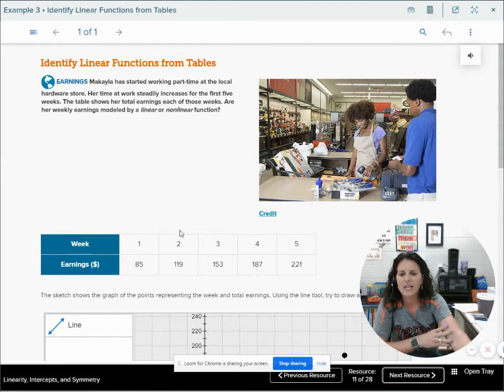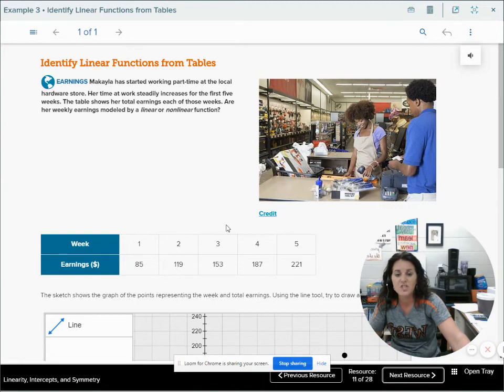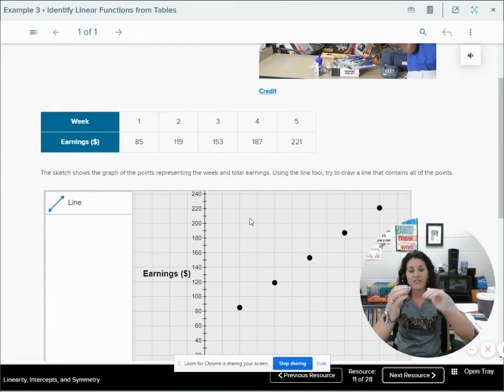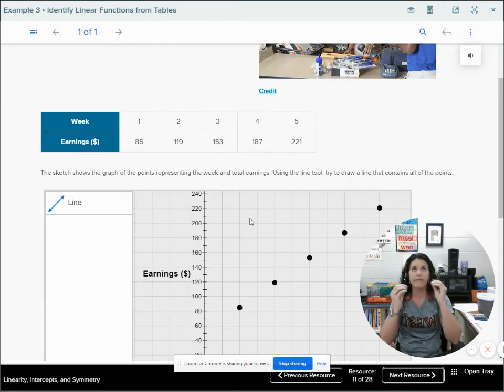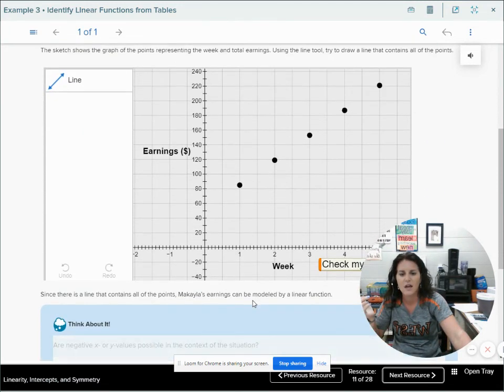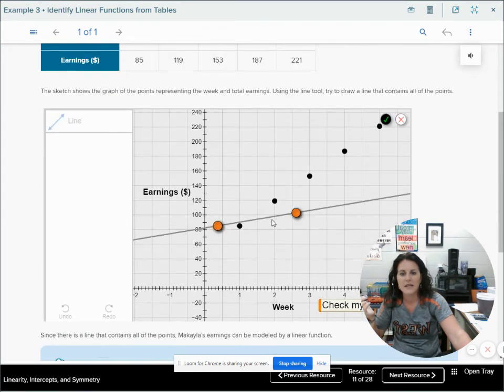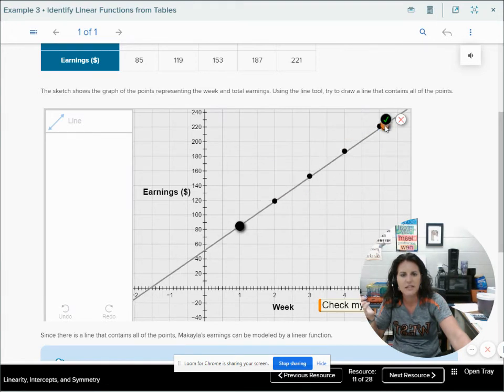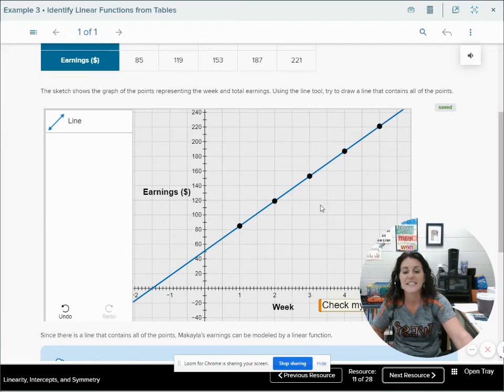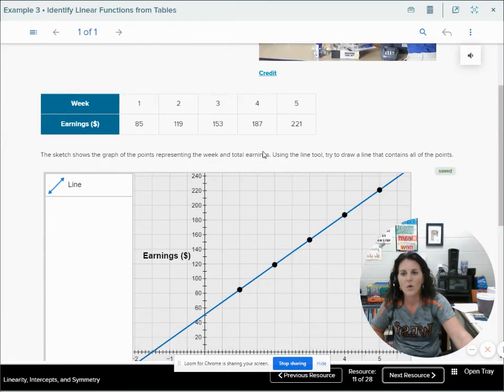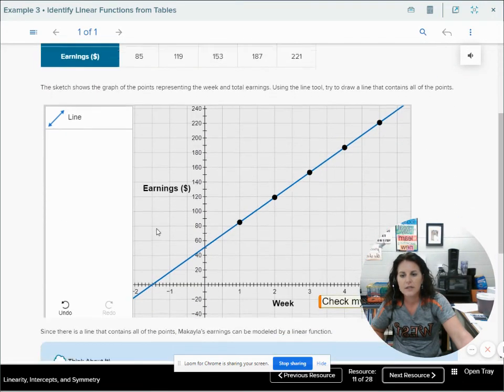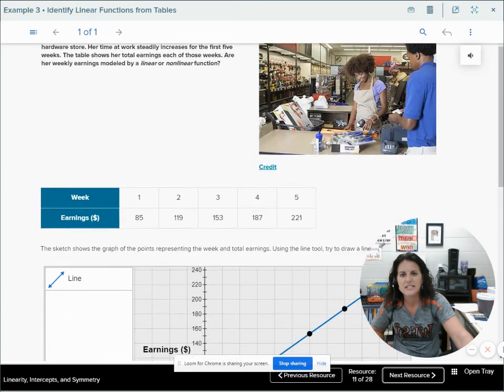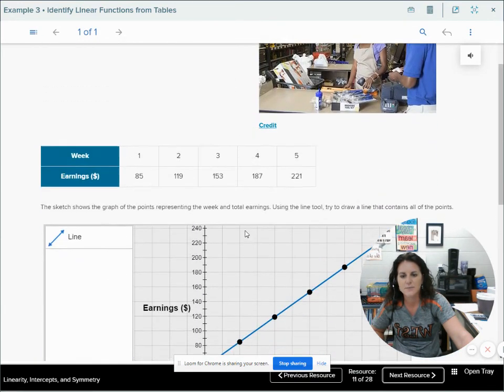Identify the linear function by looking at the table. To me, the easiest thing to do is to look and see if my rate of change is constant or to graph it. And if we graph it, we can very quickly see that those points are all going to lie in a straight line. Therefore, it is going to be linear. It's discrete because it's a bunch of random points, but it is linear because all of those points lie on a line. So in this function, it is linear.